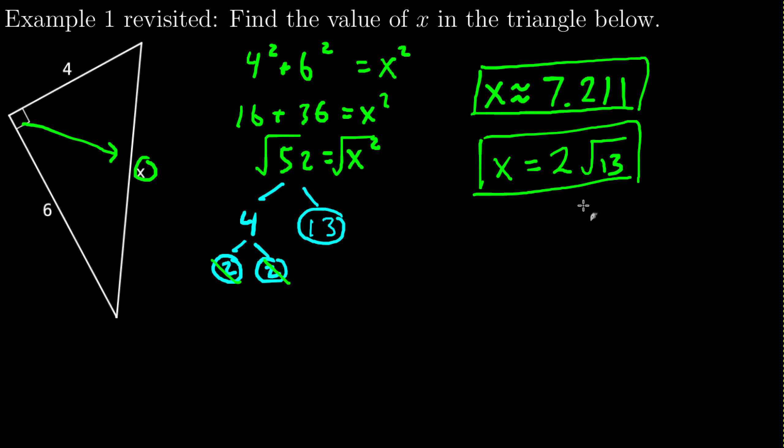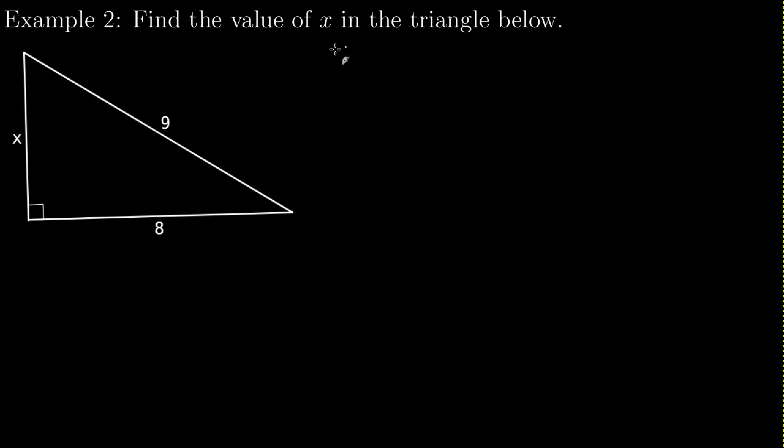All right, let's go through a couple more problems. Make sure we get the idea. So find the value of x in this triangle. I start with the right angle, see that 9 is my c, so the 9 goes by itself. And I have an x squared plus 8 squared on the left-hand side. And I'm just going to go through and evaluate. So x squared plus 8 squared is 64. 9 squared is 81. I need to solve for x squared. So I will subtract 64 from both sides.